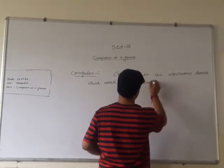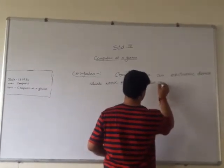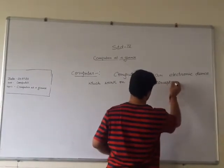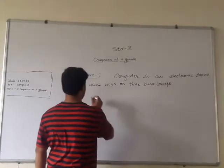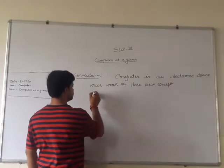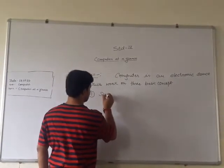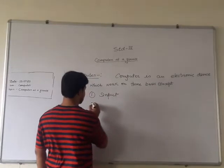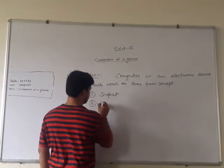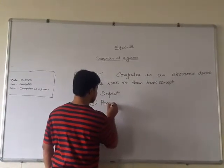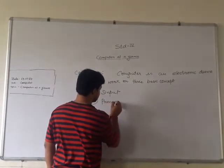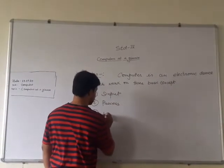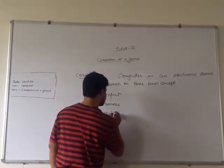The basic concept of a computer involves three stages: First, Input. Second, Process. And third, Output.